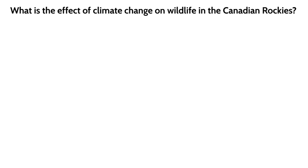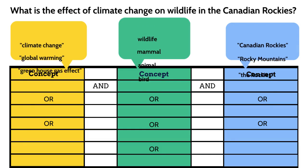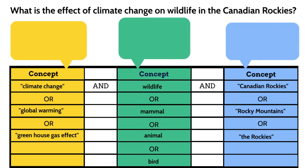Naya adds these new keywords to her concept chart. Naya places an asterisk at the end of words that could have alternate endings. For example, now her search will capture mammal, mammals, and mammalian.